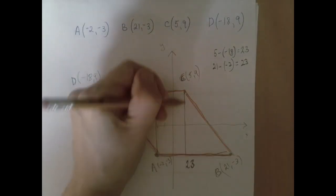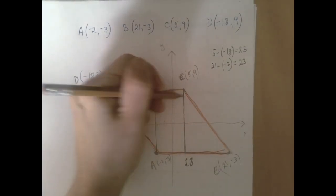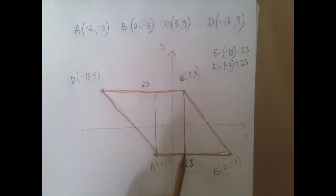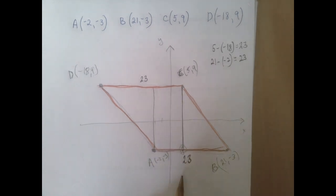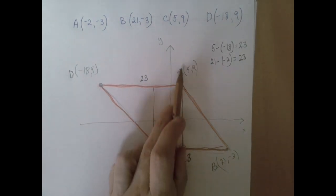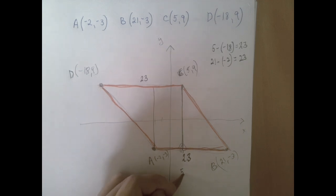What about this vertical line here? Can we figure out? We can figure out the coordinate of this point. Let's do that. So this point here, what is the x-coordinate? The x-coordinate is the same as for C. So the x-coordinate is 5, and the y-coordinate is negative 3.